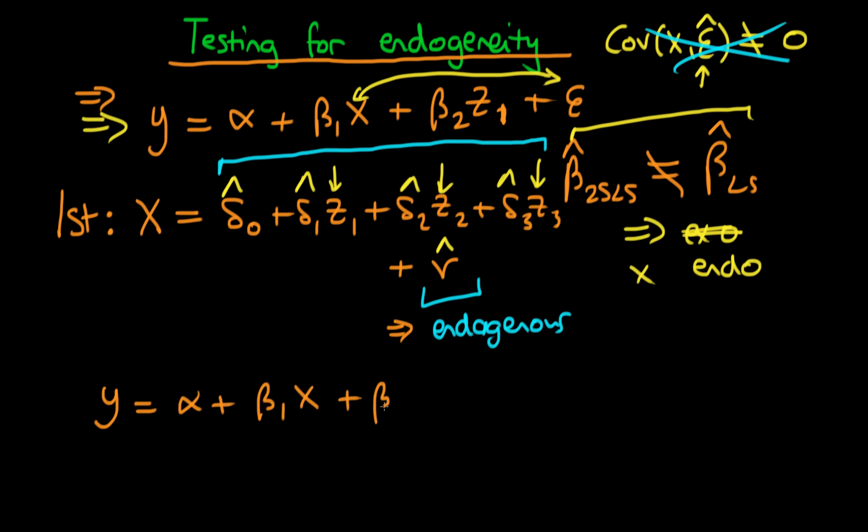So if there was a way of testing for significance of this endogenous part of x in this structural equation up here, then that might be a way of testing for whether or not x is endogenous. And as it turns out, that's exactly what we do. So essentially what we do is we run a regression of y on our original endogenous variable x. We also include our exogenous variable in the structural relationship z1, as well as our estimate of v, which we call v hat.